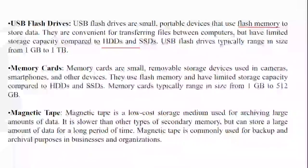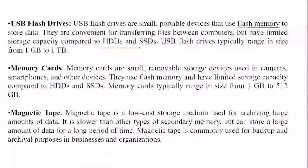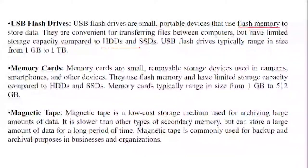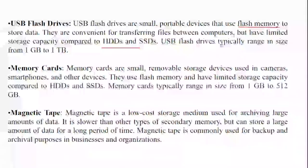Memory cards are small removable storage devices used in smartphones and other devices. They also use flash memory and have limited storage capacity, typically ranging from 1 GB to 512 GB. Magnetic tapes are a slow, low-cost medium used for archiving large amounts of data. They are slower than any other type of secondary memory but can store large data for a long period. Magnetic tapes are commonly used for backup and archival purposes in businesses and organizations.